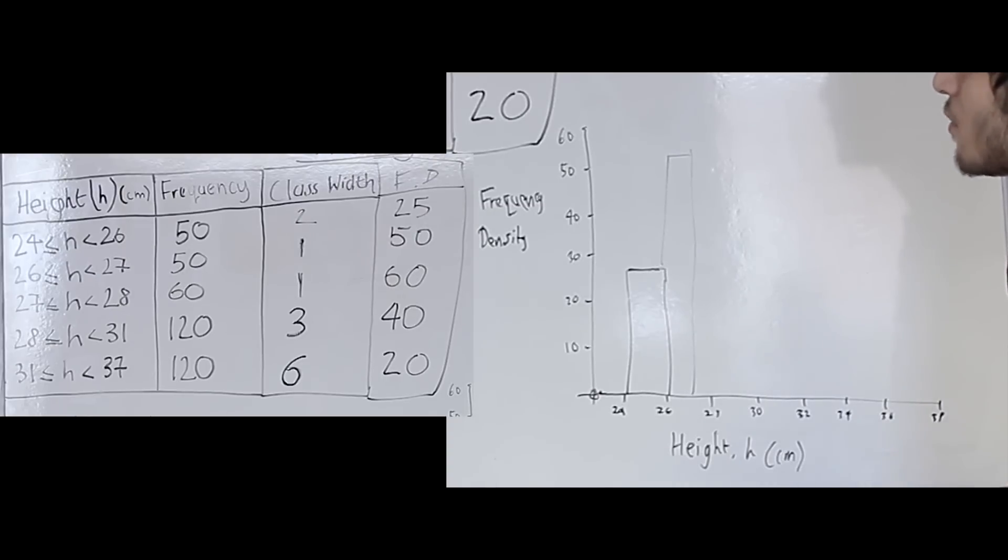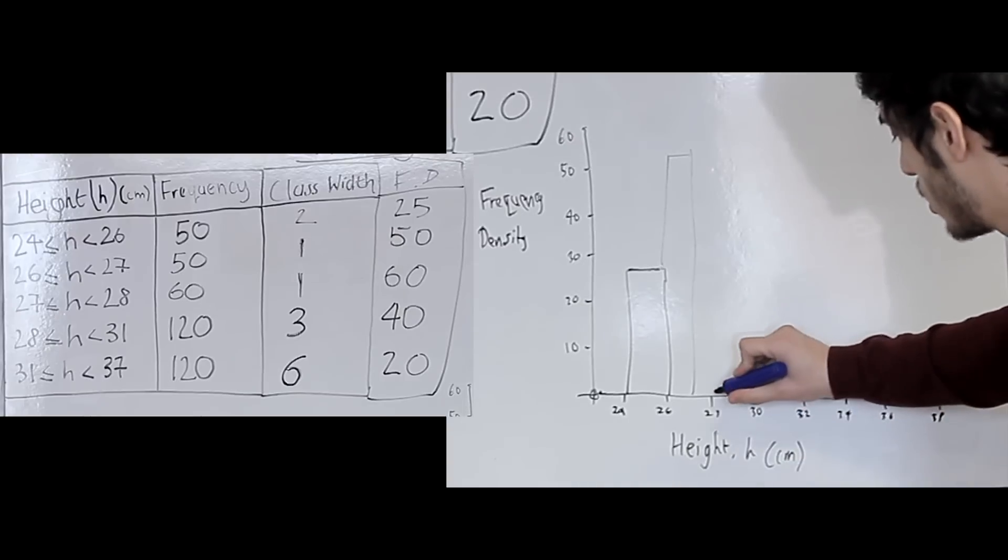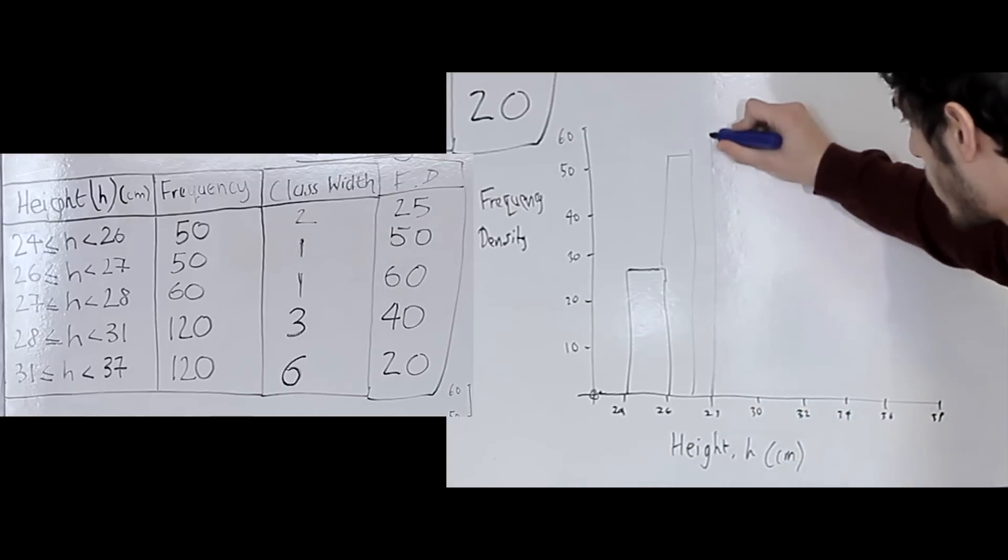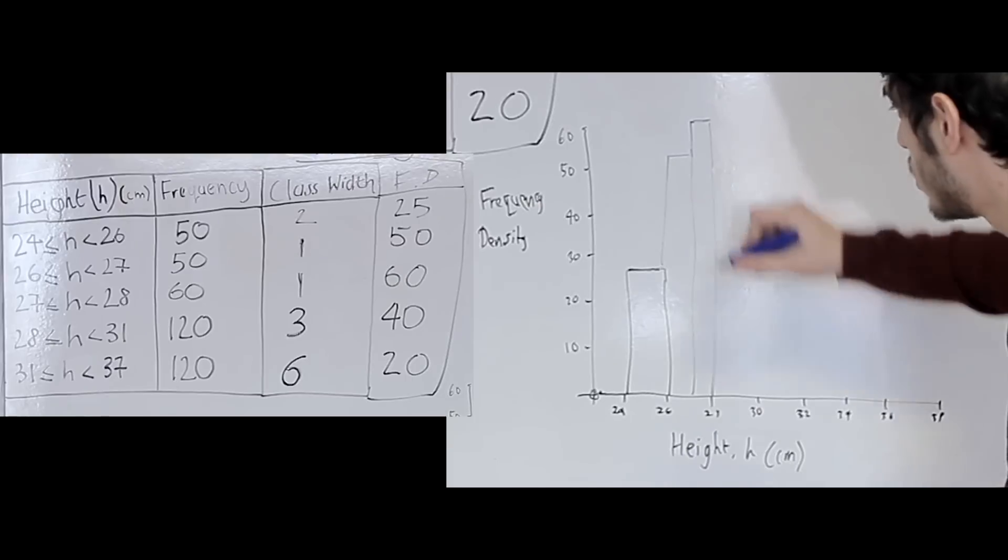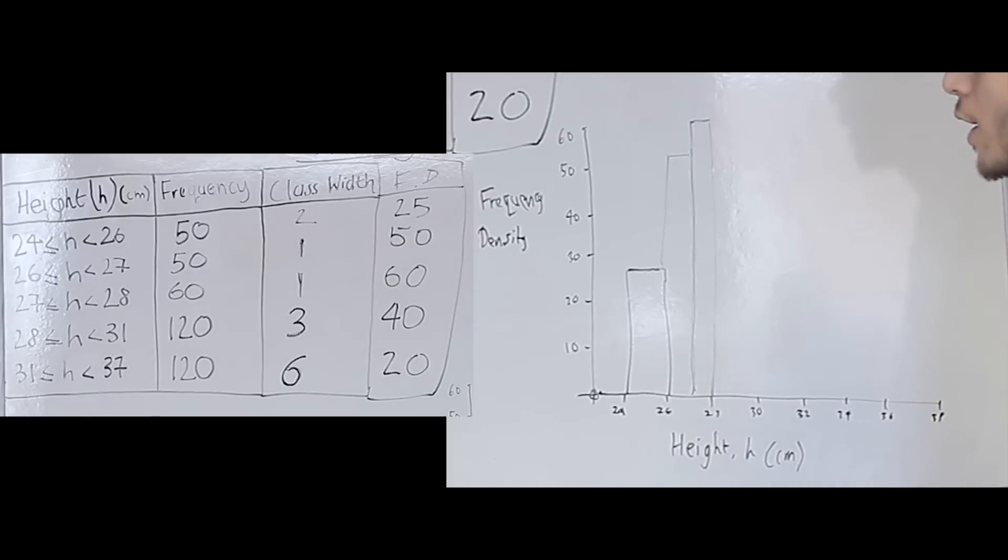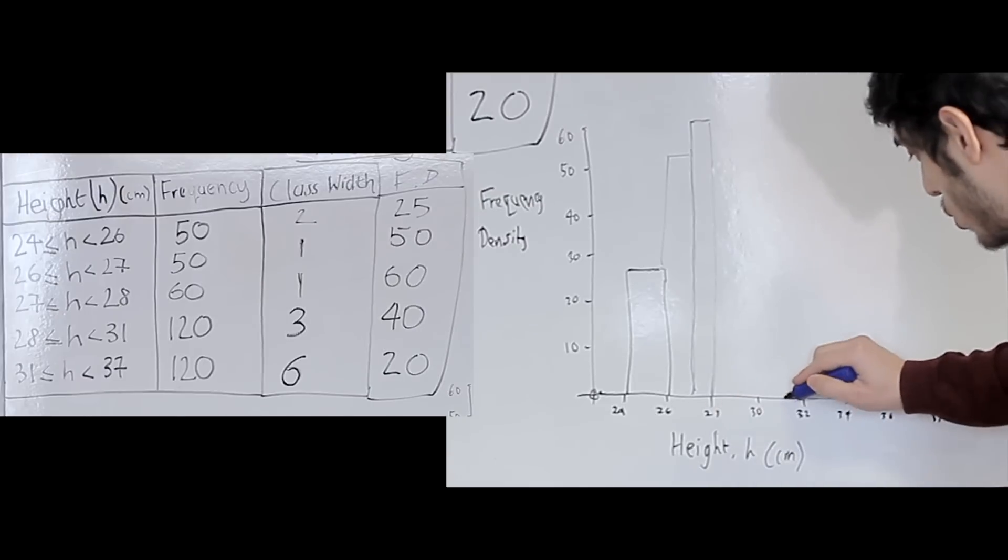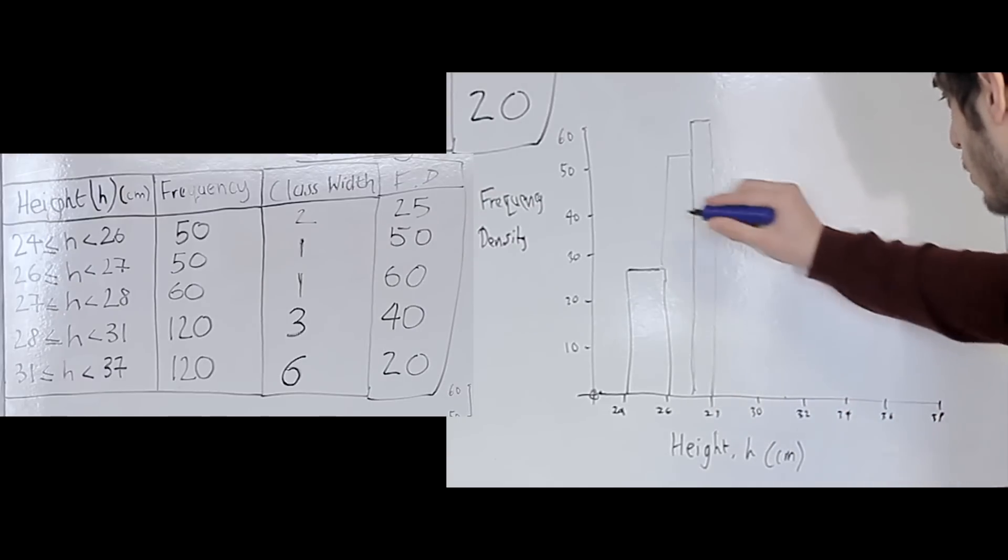So the next one is also 27 to 28, that's 60, so let's just take that all the way up here, should just be roughly there. Now for our next point that's 28 to 31 and our frequency density is 40, so 28 to 31 which is roughly here and our point is 40.